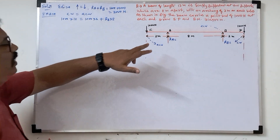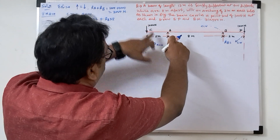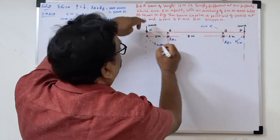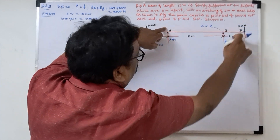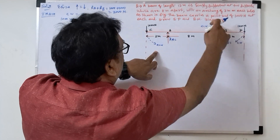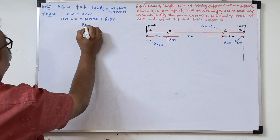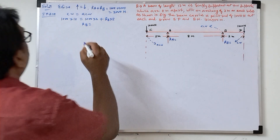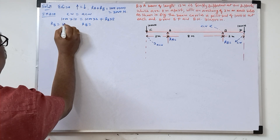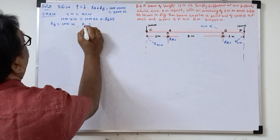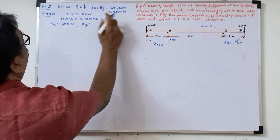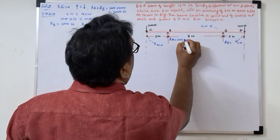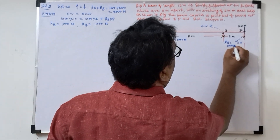Finding the moment is very simple. Taking the moment about A, this rotation is anti-clockwise, this rotation is also anti-clockwise, and this rotation is clockwise. So Rb will come thousand Newton, and Ra will also come thousand Newton. So Ra is thousand Newton and Rb is also thousand Newton.